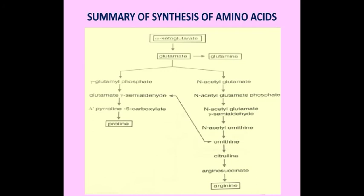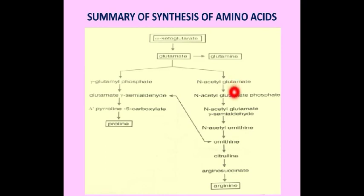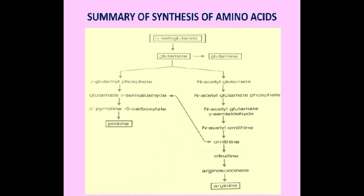Arginine is also synthesized from glutamate in plants and bacteria by the series: glutamate → N-acetylglutamate → N-acetylglutamate phosphate → N-acetylglutamate-gamma-semialdehyde → N-acetylornithine. N-acetylornithine is converted to ornithine, then citrulline, argininosuccinate, and finally arginine. In total, 4 amino acids are synthesized in the alpha-ketoglutarate precursor family.